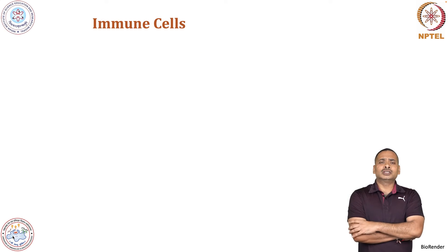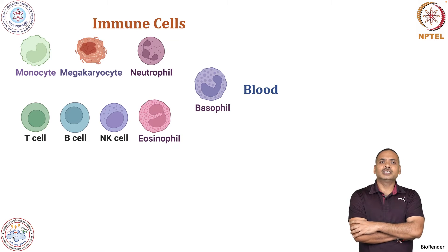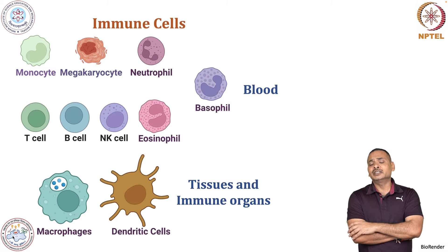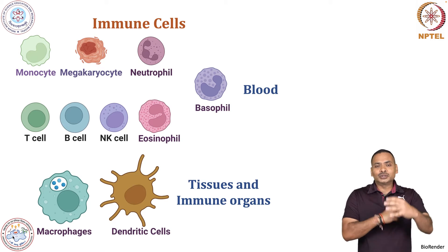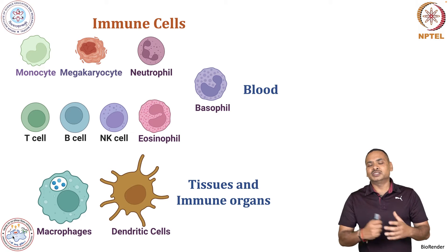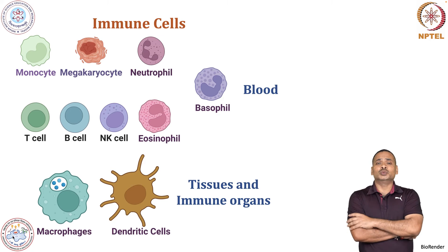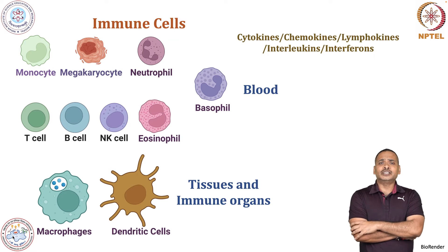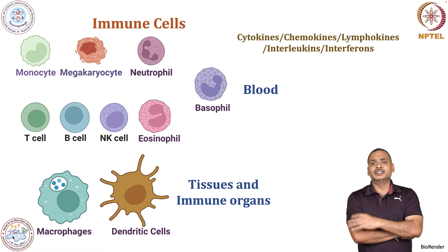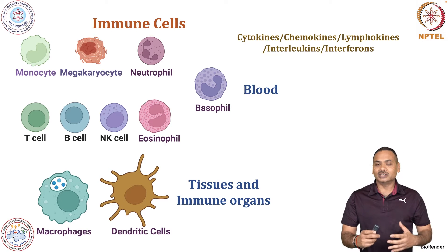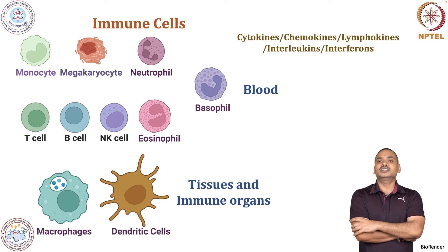We will talk about immune cells — various immune cells present in blood — and we will talk about the immune cells present in tissues and immune organs. How these immune cells communicate with each other: they basically produce molecules which we call cytokines, chemokines, lymphokines, interleukins, and interferons. These are the molecules used by immune cells to communicate with each other.